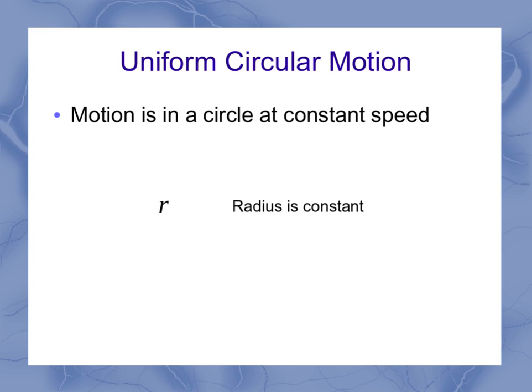The in a circle part means that my radius is constant as it moves around. And the constant speed is, particularly in this case, referring to the angular speed.